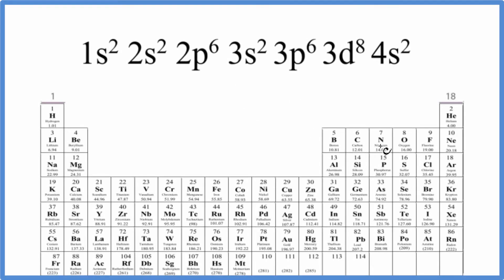There are two main ways we can figure out which element on the periodic table is represented by this electron configuration that ends in 3d⁸4s².